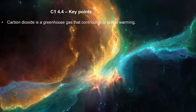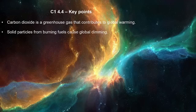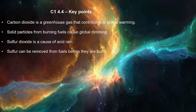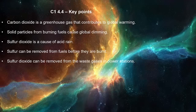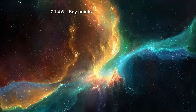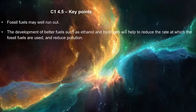Carbon dioxide is a greenhouse gas that contributes to global warming. Solid particles from burning fuels cause global dimming. Sulfur dioxide is a cause of acid rain. Sulfur can be removed from fuels before they are burnt. Sulfur dioxide can be removed from waste gases in power stations. Fossil fuels may well run out. The development of better fuels such as ethanol and hydrogen will help to reduce the rate at which fossil fuels are used and reduce pollution.